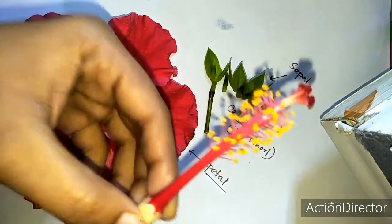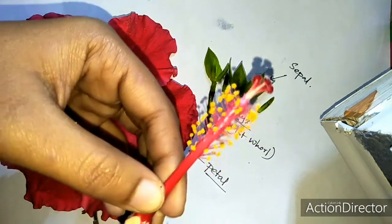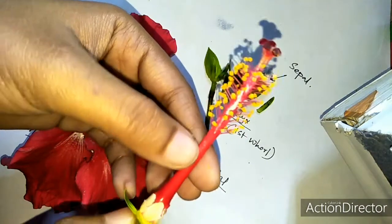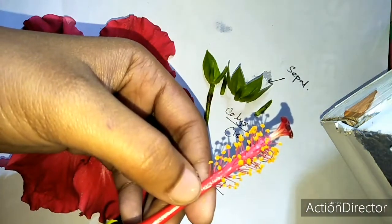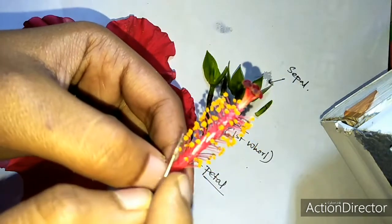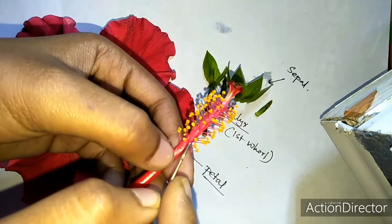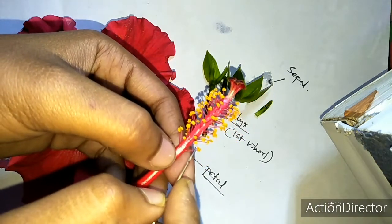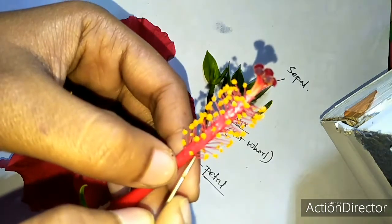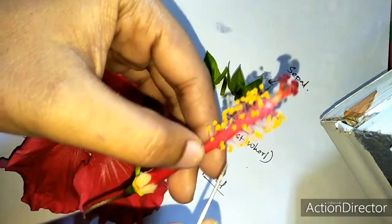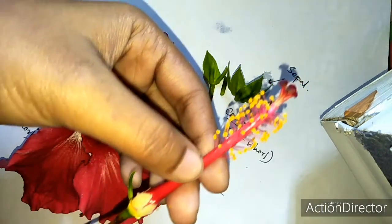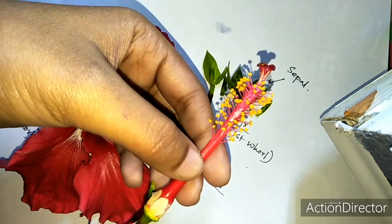This is actually the main reproductive part where the male and female parts are present. Now, this yellow color — all these yellowish structures — are the pollen grains, and where these pollen grains are present is the anther. The other structure is the filament.